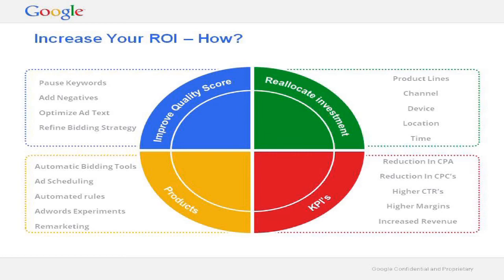If you want to improve quality score, that basically revolves around boosting click-through rates. The way you do that is by focusing on your ad text and the quality of your matching — is your ad text as tailored to the search query on Google's search results page as it could be? The more you improve that linking, the better the performance of your account. On the investment side, rather than just reducing CPCs or cutting costs, think about whether you can reallocate investment into the product lines that are most profitable — whether display is doing better than search, whether mobile is more profitable than desktop, and things like time of day and location. Those are all levers at your control.